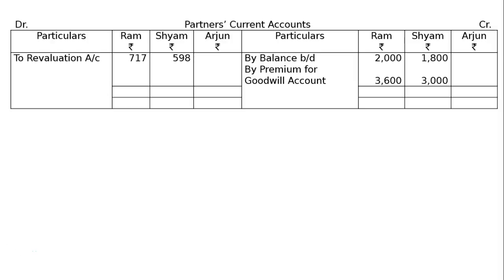On the debit side: revaluation loss transferred to revaluation account — Ram Rs. 717, Siam Rs. 598, Arjun nil. The totalling of the current accounts gives Ram Rs. 5,600 and Siam Rs. 4,800 on both sides. Balance carried down: after deducting revaluation loss, Ram's balance is 5,600 minus 717 = Rs. 4,883, and Siam's balance is 4,800 minus 598 = Rs. 4,202.